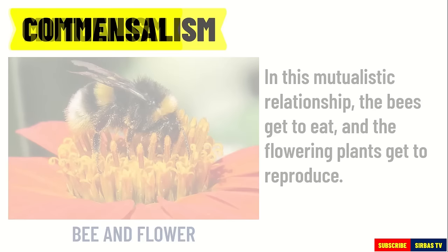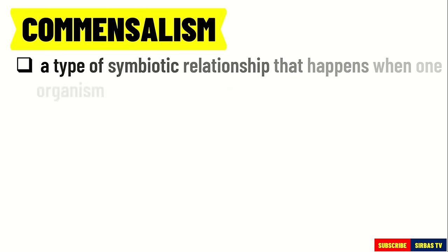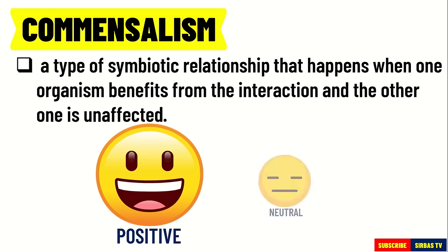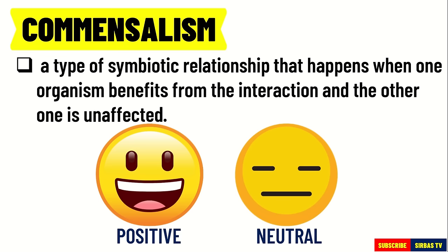Next is commensalism. It is a type of symbiotic relationship that happens when one organism benefits from the interaction and the other is unaffected — it is neither harmed nor benefited. The interaction of two species in commensalism is positive-neutral since one species benefits and the other is not affected.